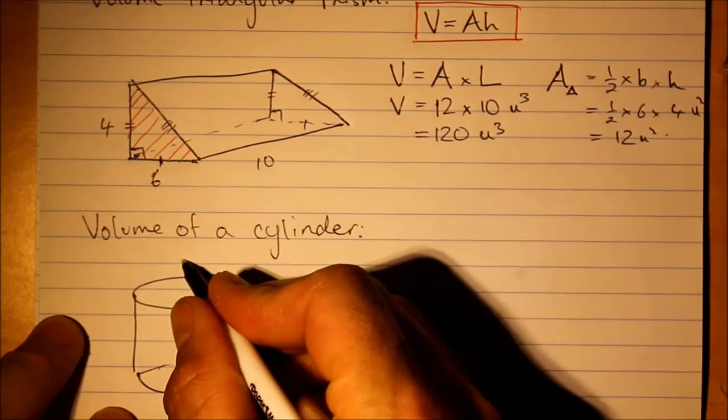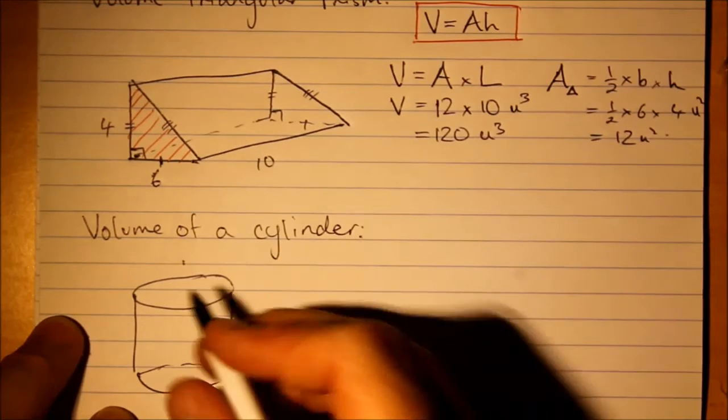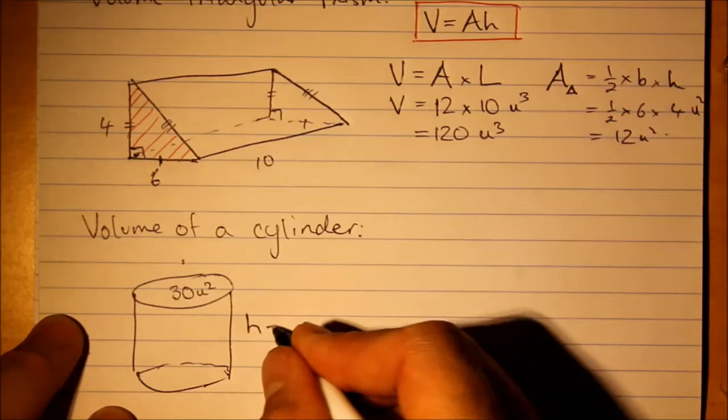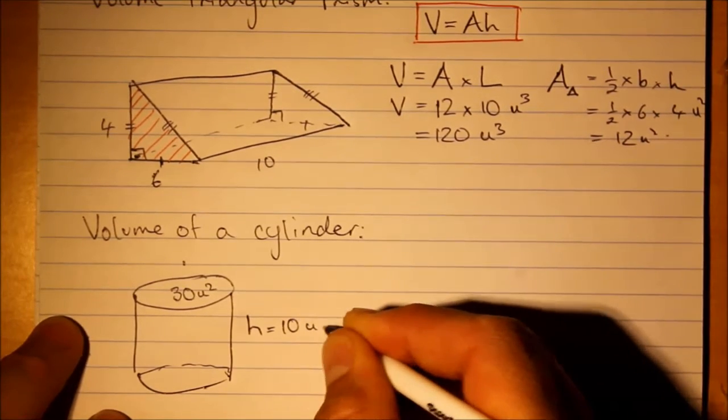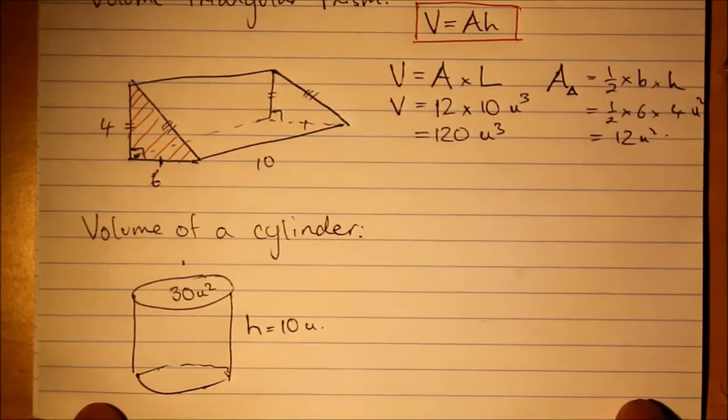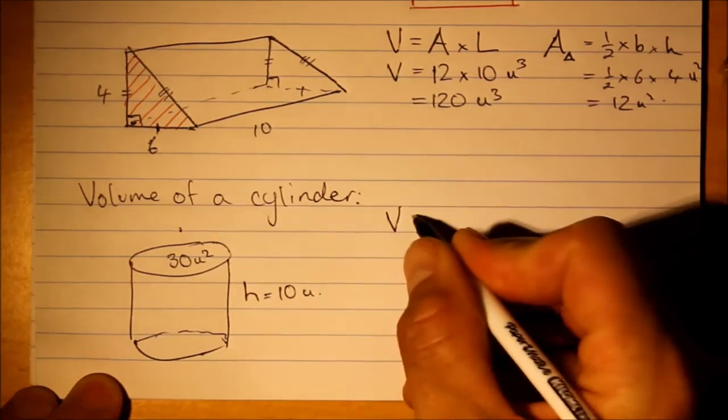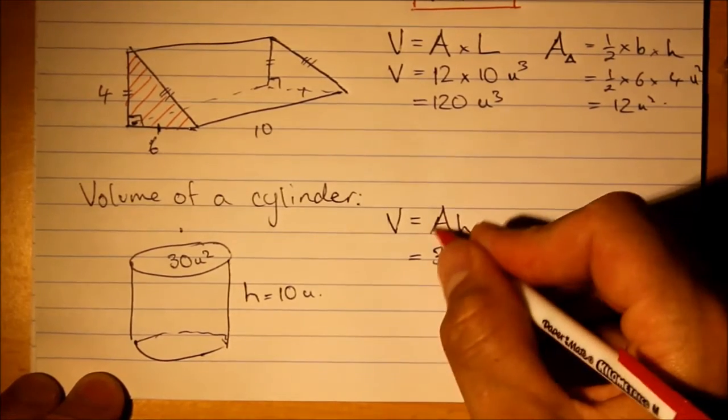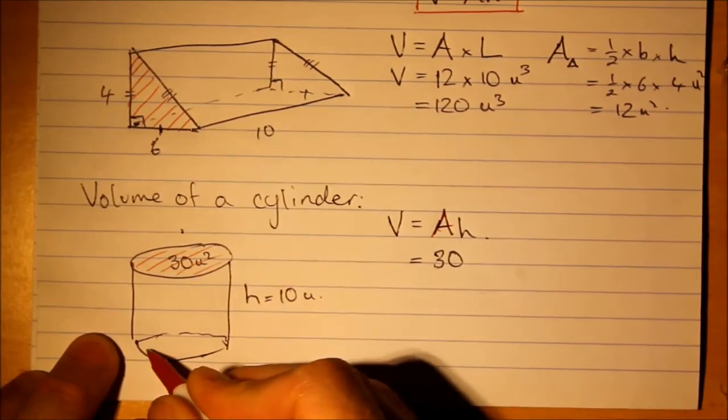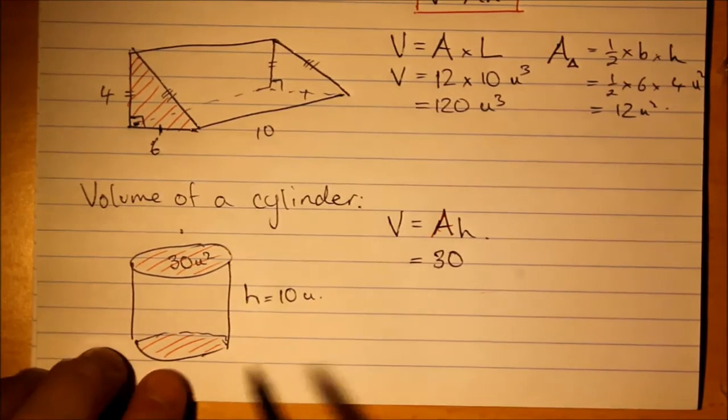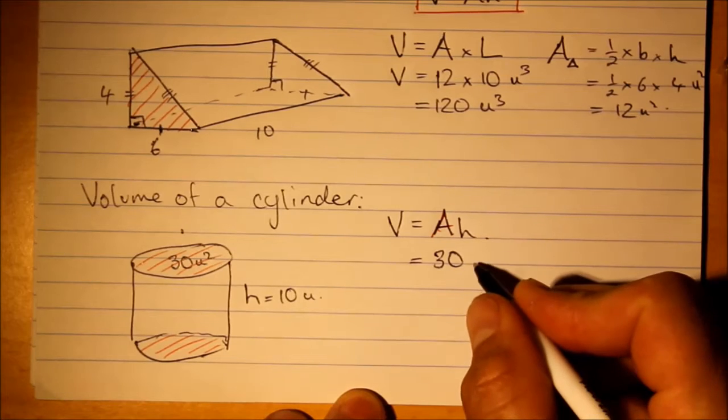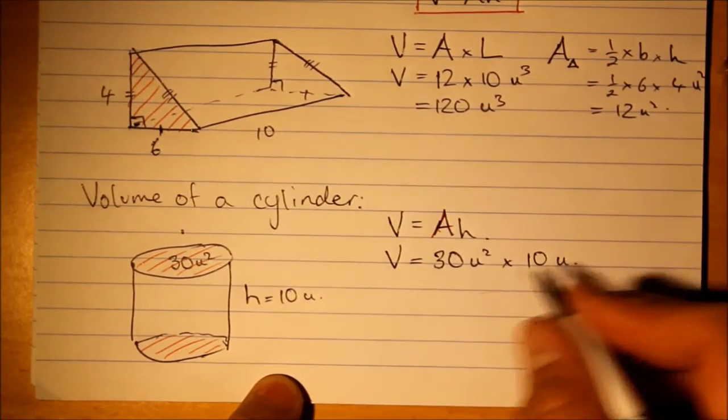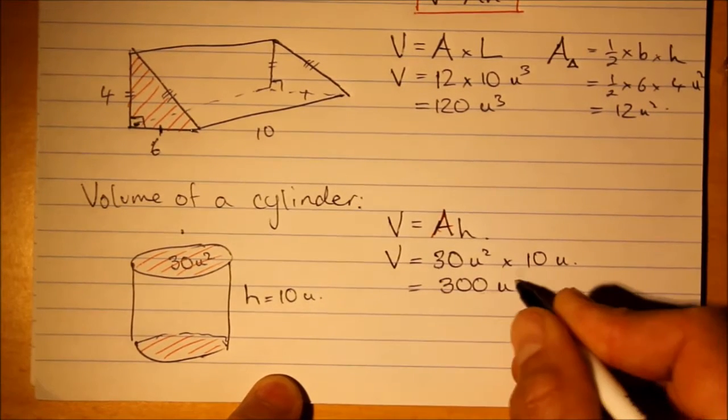H in this sense and sometimes they'll give you problems where they give you the area. This might be 30 units squared and the height equals 10 units. What would the volume of this shape be? This cylinder, well we simply just use V equals AH. And area, well we're already told that, remember, A in this case is this cross section. As long as it's uniform that's going to be fine for us. The volume equals 30 units squared times 10 units, so again we've got units cubed.